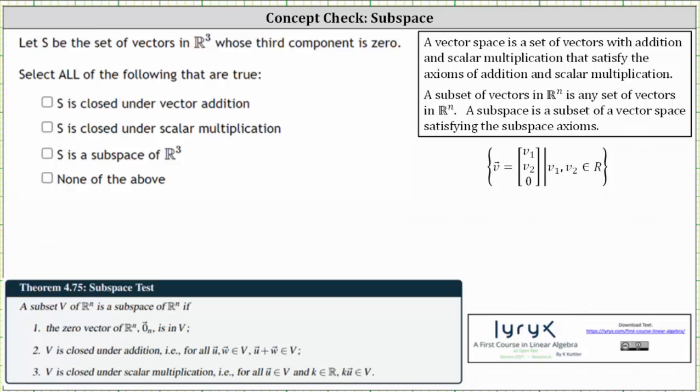Let S be the set of vectors in R³ whose third component is zero, which means all the vectors in the subset S are in the form V sub one, V sub two, zero, where V sub one and V sub two are any real numbers. We know R³ is a vector space, and therefore S is a subset of R³. Our goal here is to determine if S is also a subspace, which is a subset of a vector space satisfying the subspace axioms shown below. And we're asked to check all the following that are true.